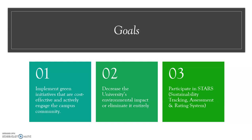For goal number one — implementing green initiatives that are cost-effective and actively engage the campus community — most buildings are already built on college campuses. Campuses that cannot expand will have to retrofit, which can cost anywhere from two to seven dollars per square foot depending on the age, existing design, and purpose of the building. The return on investment ranges between two to fifteen years, but a survey by Johnson Controls found that 50% of commercial building owners have an internal return greater than 30%, with utility savings of 50 cents per square foot if energy use is reduced by 20%.